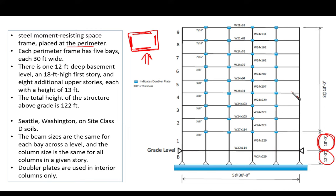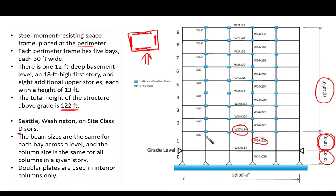There are eight additional upper stories each with a height of 13 feet. The total height of the structure above grade is 122 feet. The site is in Seattle, Washington on site class D soils. Beam sizes are the same for each bay across a given level, and the column size is the same for all columns in a given story.